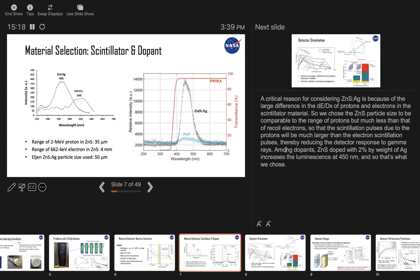So as the neutron converter, PMMA is a very good choice because it has a high hydrogen to carbon ratio. It has high optical transparency, so it can double as a light guide and it exhibits the least autofluorescence among all plastics. A critical reason for considering zinc sulfide is because of the large difference in dE/dx of between protons and electrons in the scintillator material.